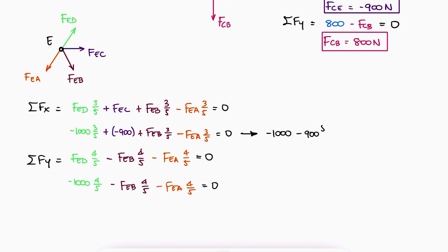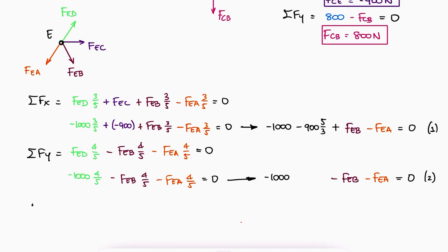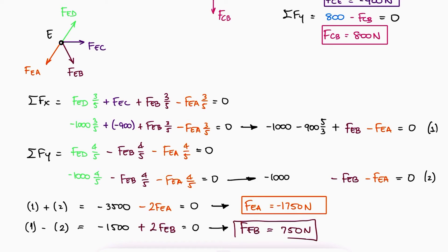Multiplying the first one by 5 thirds and the second one by 5 over 4, we see that by adding them together, FEB cancels out and FEA can be solved for, and by subtracting 2 from 1, we can solve for FEB.